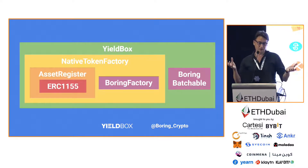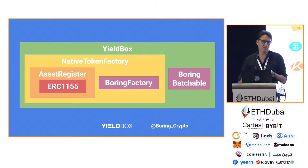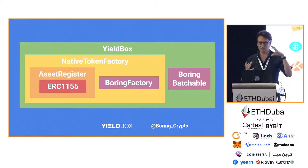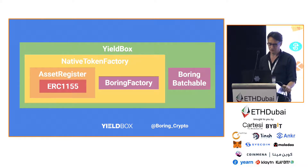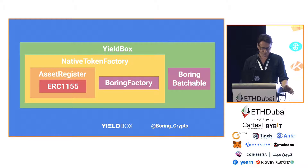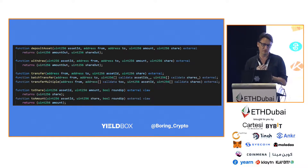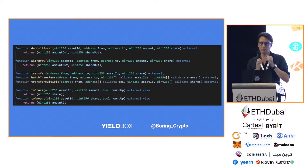Around all of that is the Yieldbox contract itself, which includes boring batchable — a very simple function that lets you call any function in the Yieldbox and batch them, so you can call 10 of them at the same time in a single transaction. Just some gas optimization there. There are also deposit and withdraw functions, plus a whole bunch of different gas-optimized transfer functions depending on how you're transferring — whether you're transferring a bunch of assets from the same user, or from one user to 20 users.